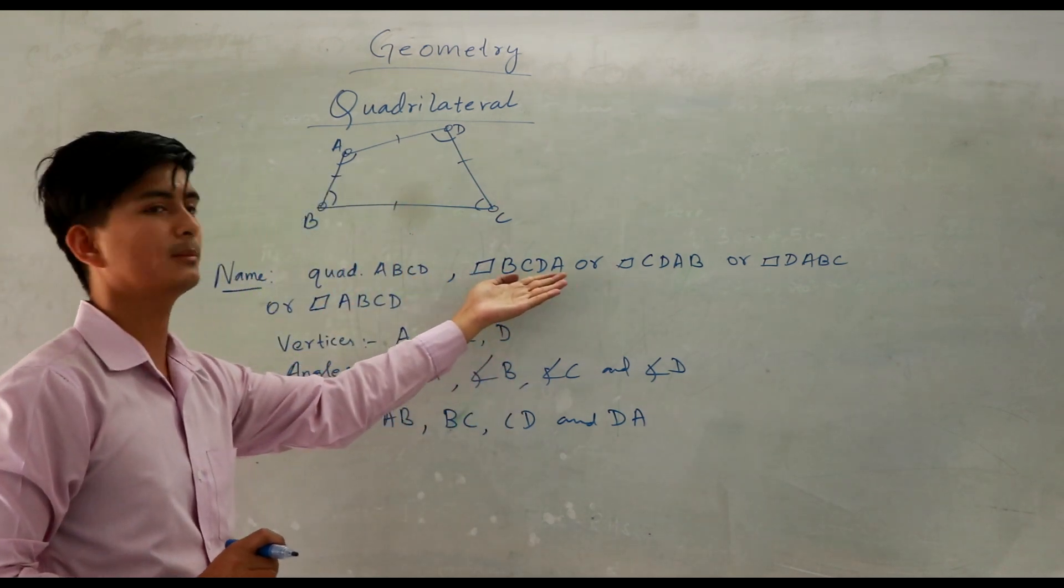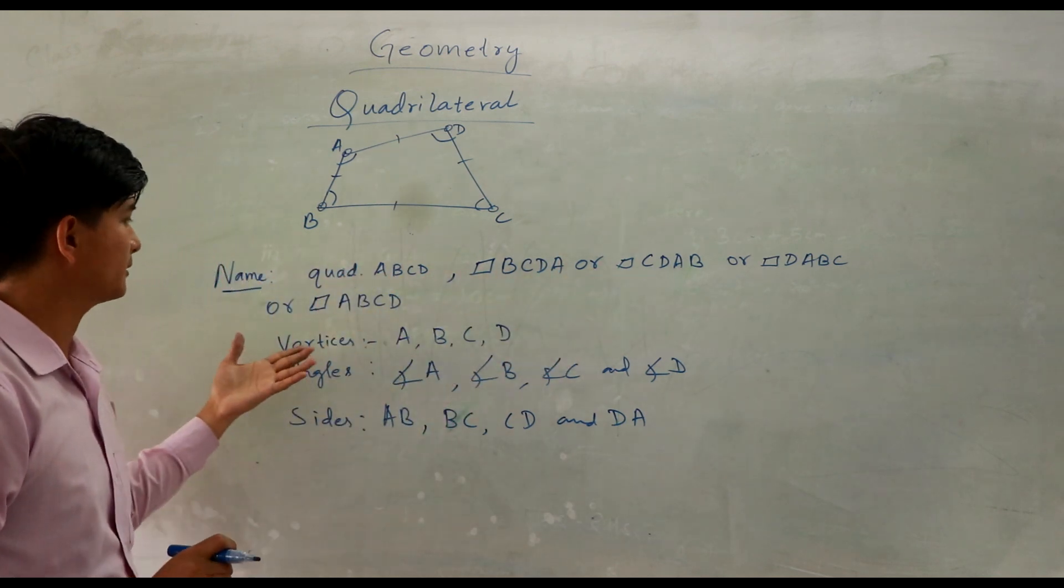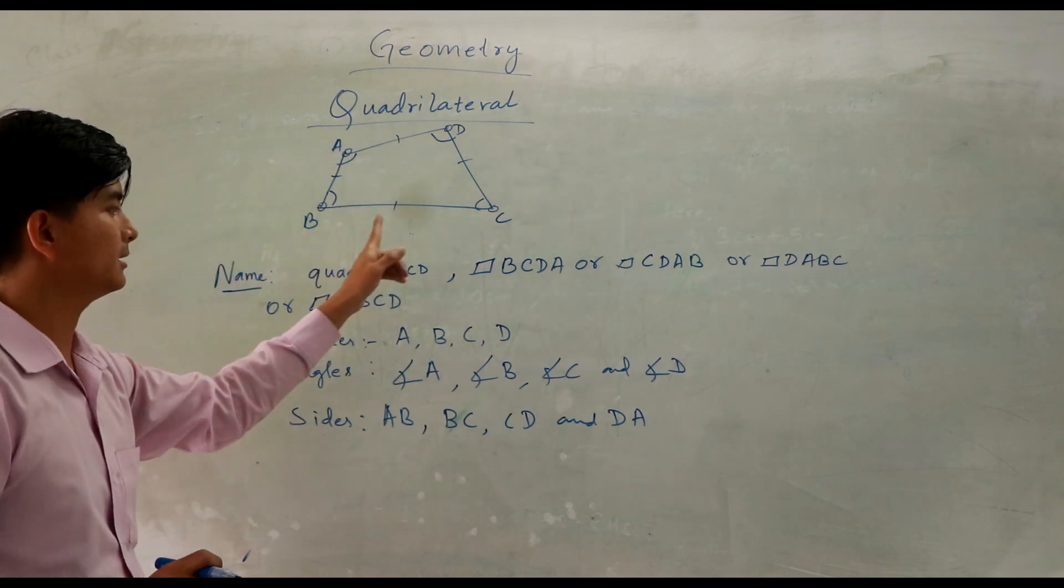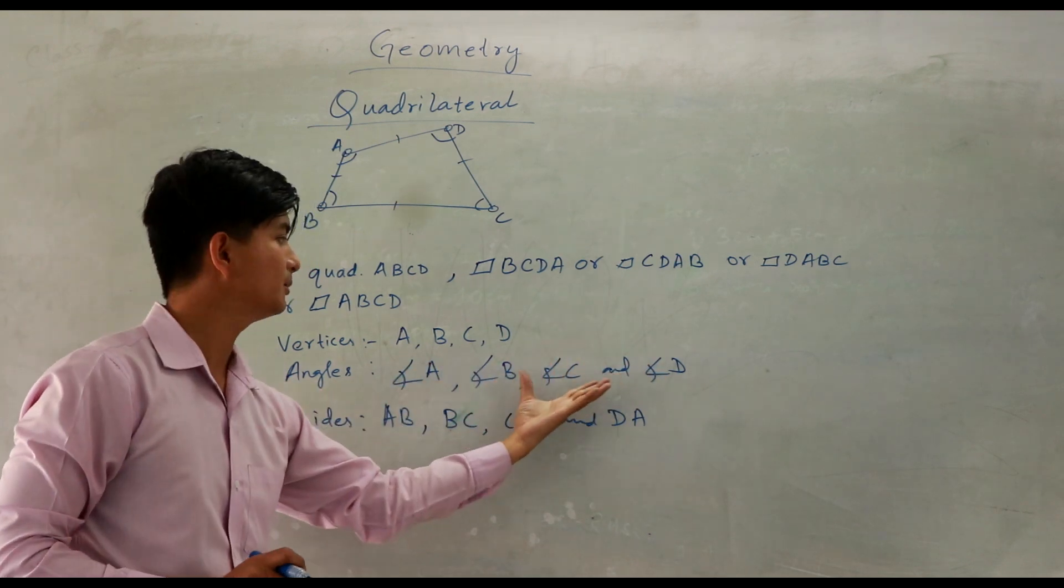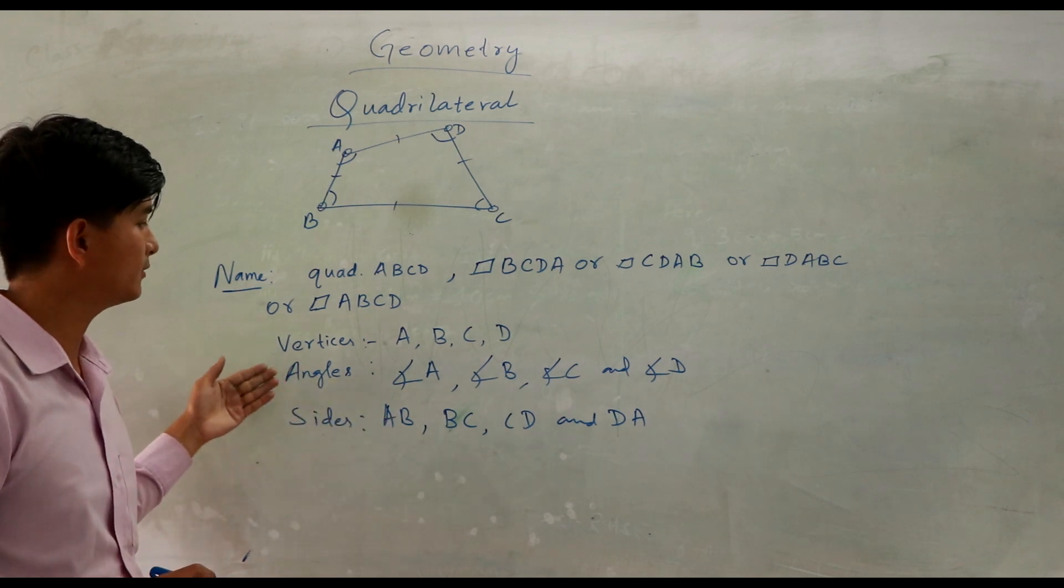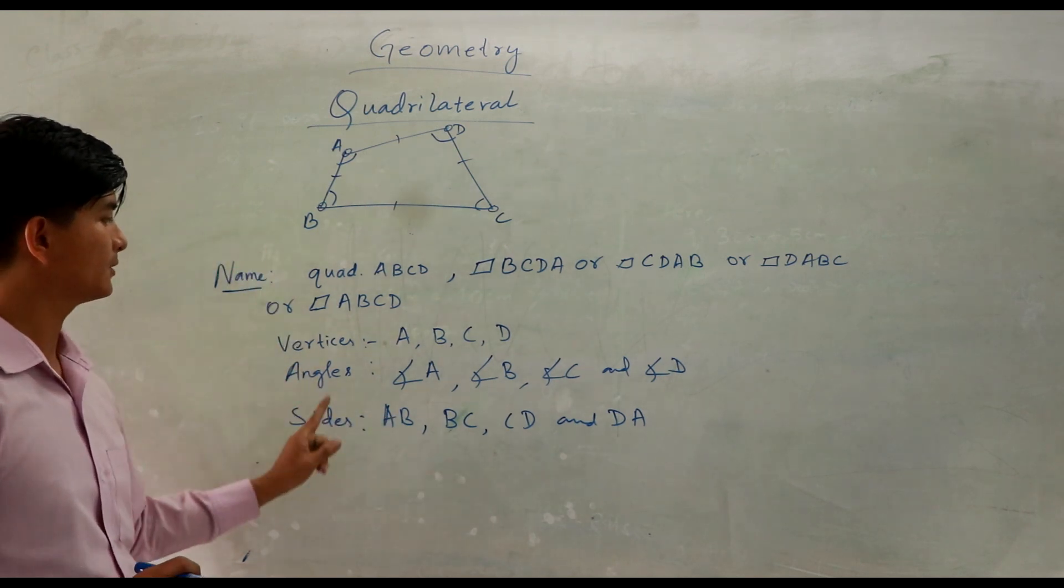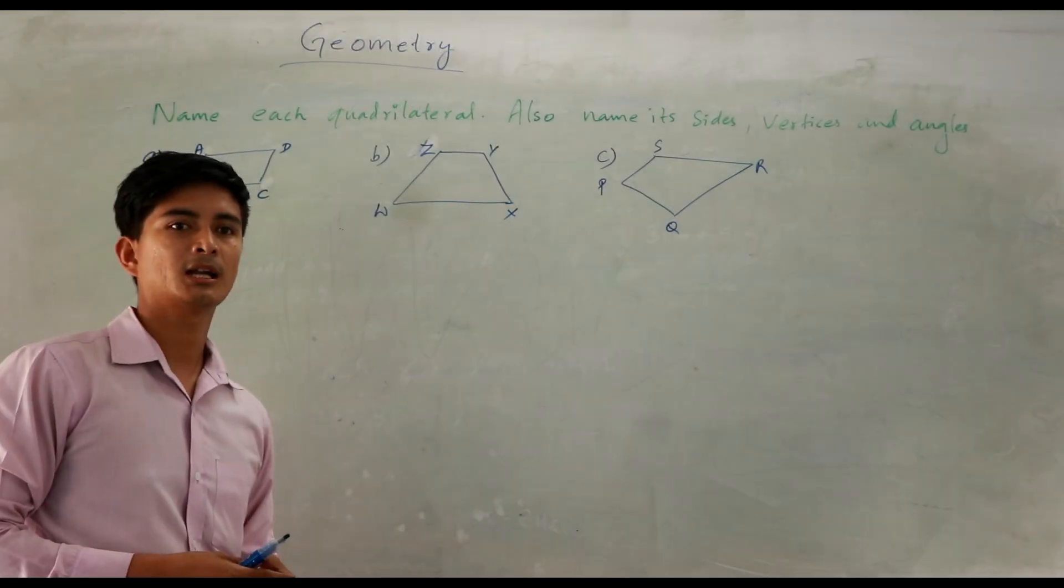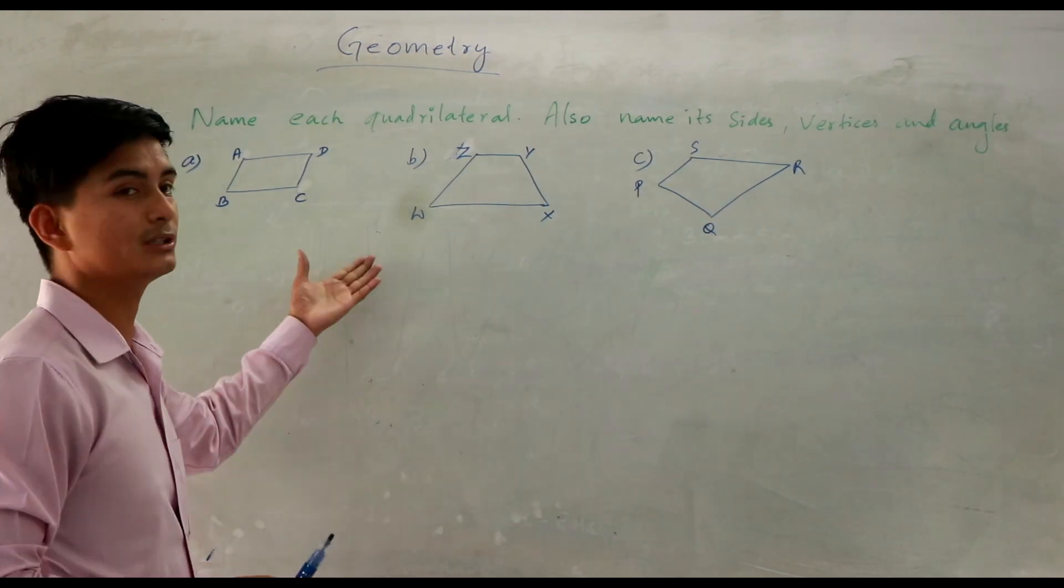They are correct: vertices are the four corners and vertices, angles are angle A, angle B, angle C, angle D. These are the four sides.